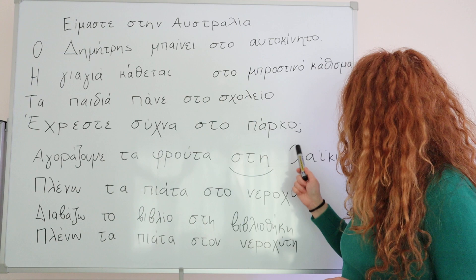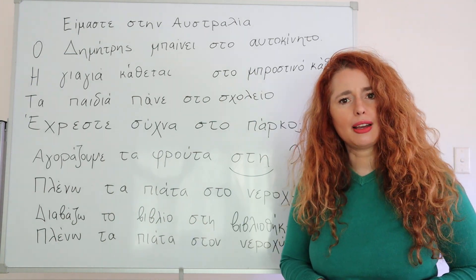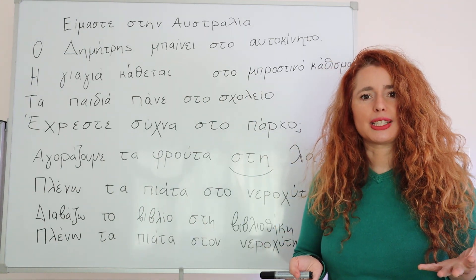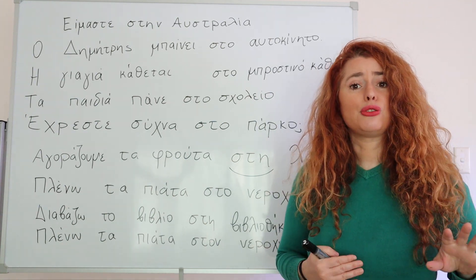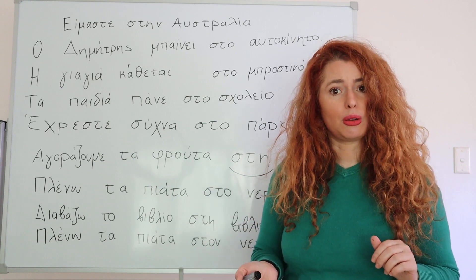Έρχεστε συχνά στο πάρκο. Do you come often to the park? When we have two objects in the sentence, one direct and one indirect object, usually the preposition SE is used for the second object, the indirect object.